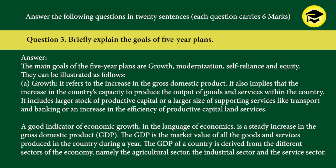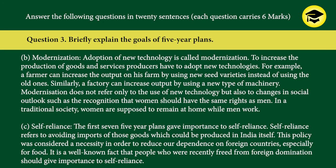Question 3: Briefly explain the goals of five-year plans. Answer: The main goals are growth, modernization, self-reliance, and equity. A) Growth refers to the increase in the Gross Domestic Product, implying an increase in the country's capacity to produce goods and services. It includes larger stock of productive capital, larger supporting services like transport and banking, or increased efficiency of productive capital. A good indicator of economic growth is a steady increase in GDP — the market value of all goods and services produced in the country during a year, derived from the agricultural, industrial, and service sectors.